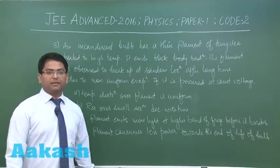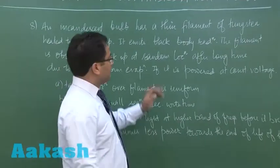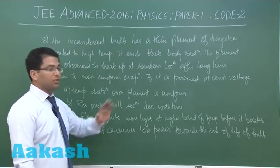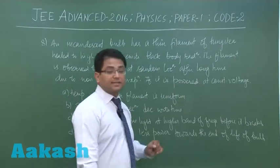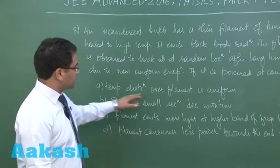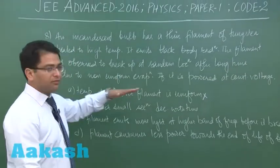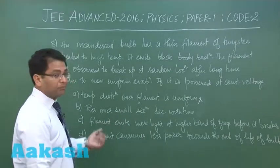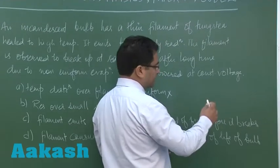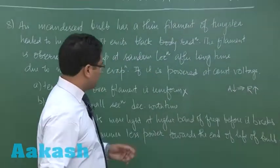Question number eight is very beautifully framed and it's something like this: An incandescent bulb has a thin filament of tungsten heated to a high temperature. It emits black body radiation and the filament is observed to break up at random locations after a long time due to non-uniform evaporation. If it is powered at constant voltage, in other words the supply is constant, we need to choose these options. Now the first thing you see: temperature distribution over filament is uniform. This is incorrect because if evaporation rate is non-uniform, it's a clear indication that the temperature distribution would also be non-uniform. Resistance over small section decreases with time—let's see. Now you see if the radius decreases, the cross-sectional area would decrease, so it implies the resistance has to increase. But here it says the resistance decreases, so this would be incorrect.